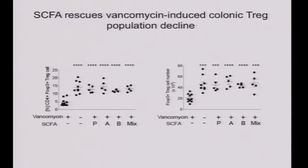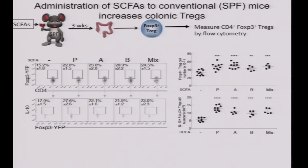Many immunologists have looked at how specific antibiotics and perturbing the microbiota affect immune cell subsets. Kenya Honda showed that vancomycin markedly affected immune cell populations. We wanted to know if short-chain fatty acids could rescue that observation. We fed vancomycin for several weeks, then added SCFAs — propionate, acetate, butyrate, and the mix — and found that addition of short-chain fatty acids was sufficient to rescue population frequency and Treg number. We then asked whether SCFAs would augment regulatory T-cell populations in conventional mice, and that's just what we saw.